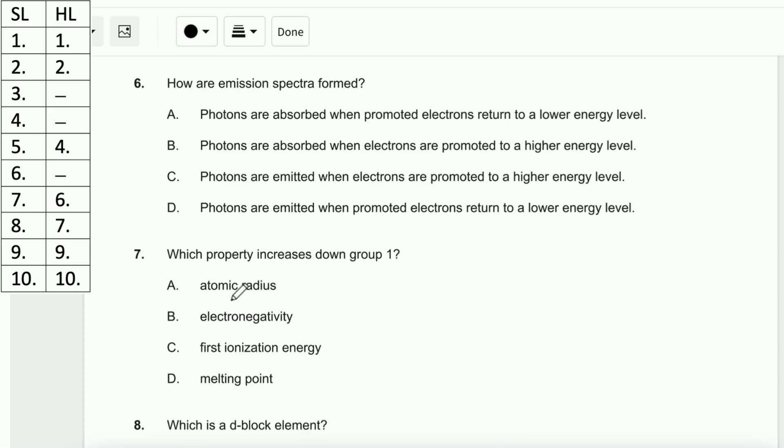Number 6. How are emission spectra formed? Emission is releasing when the electron drops to a lower energy state. Therefore, it's from higher energy to lower energy. When talking about emission, it's releasing energy. Thus A and B are not the answer. It's between C or D. Emission is from higher energy to lower energy level. Therefore, the answer is D - returned to a lower energy level.